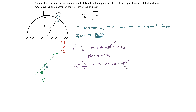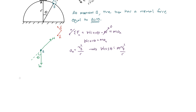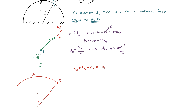Now we need to find v_b. The most universal approach is the concept of energy. Let me draw a diagram: point a is at the top of the circle and point b is where the box leaves. We apply the work-energy principle: kinetic energy at a plus potential energy at a plus work done equals kinetic energy at b plus potential energy at b.